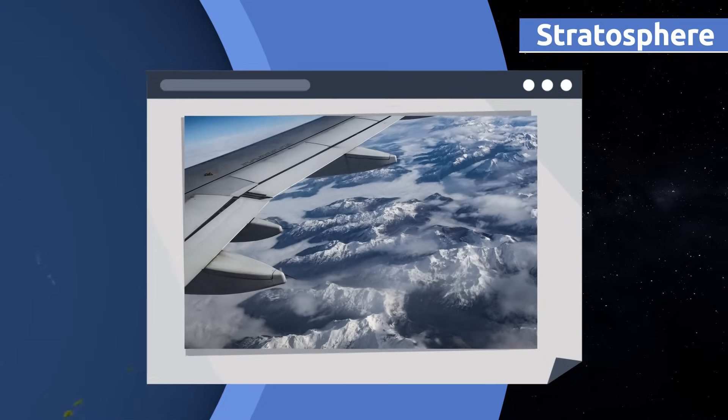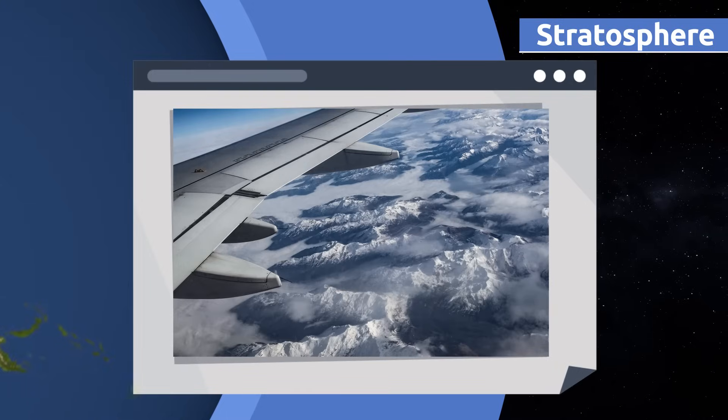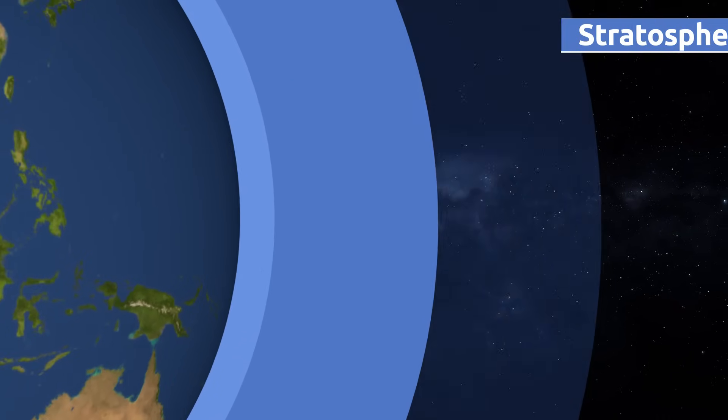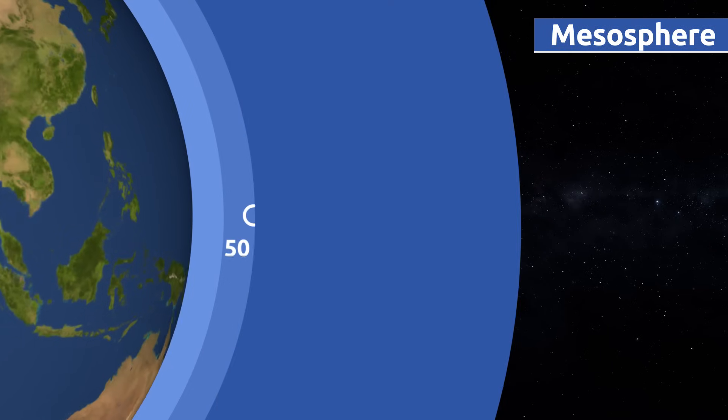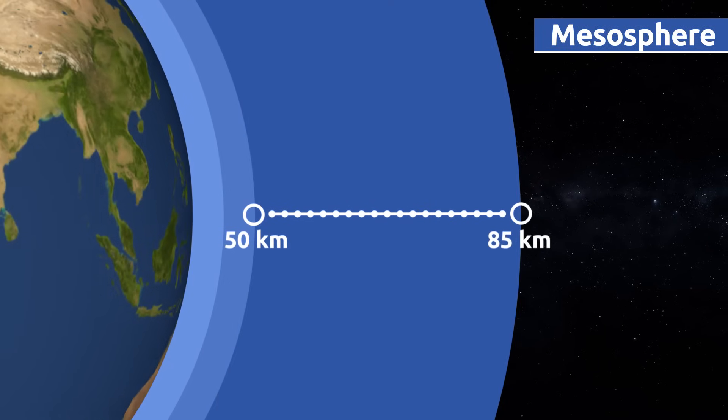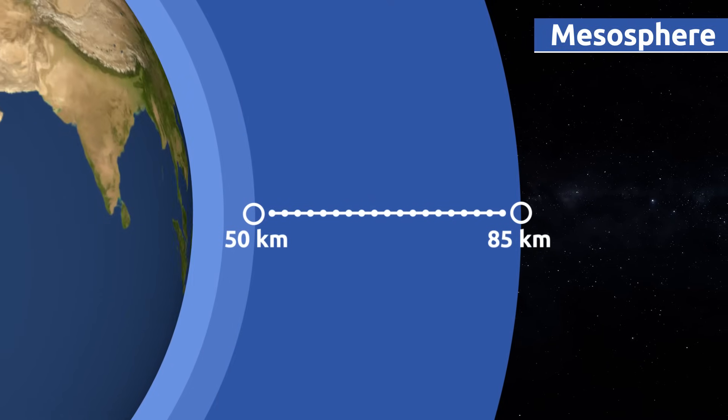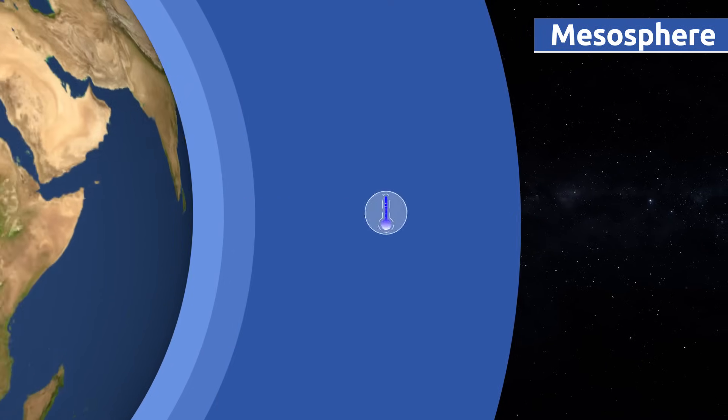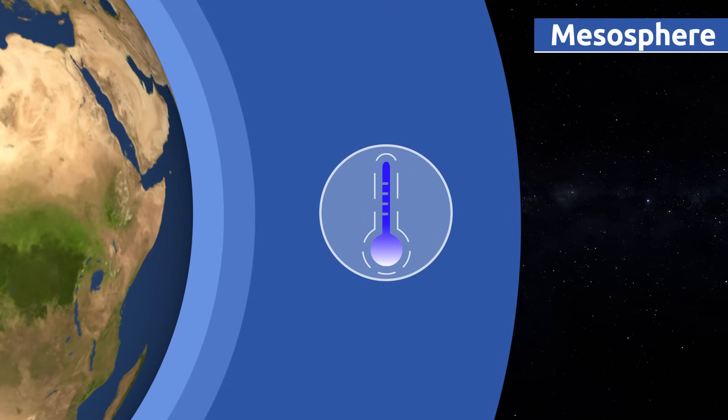Do you know that airplanes fly in the stratosphere to avoid turbulence? The mesosphere extends to an altitude of 50 to 85 kilometers above sea level.